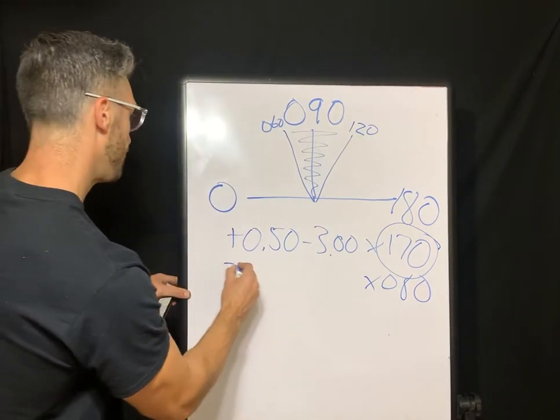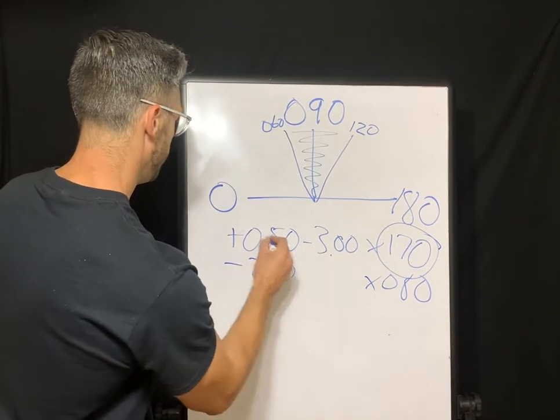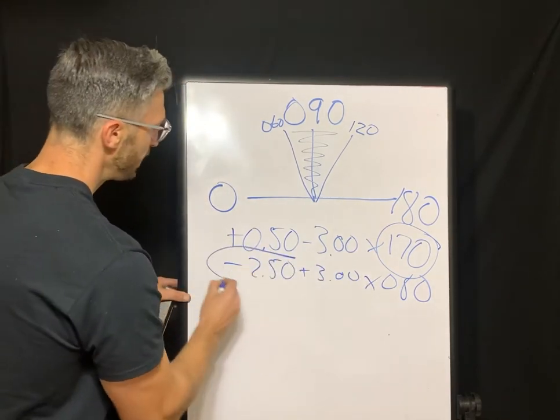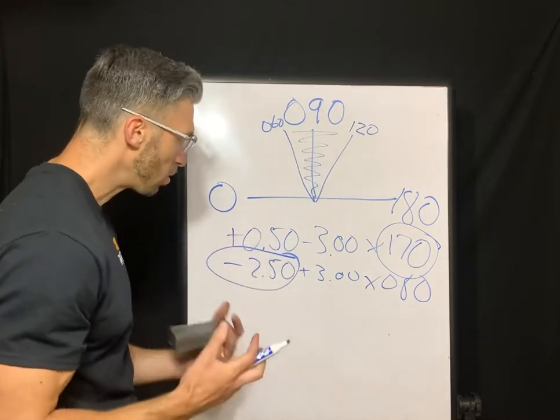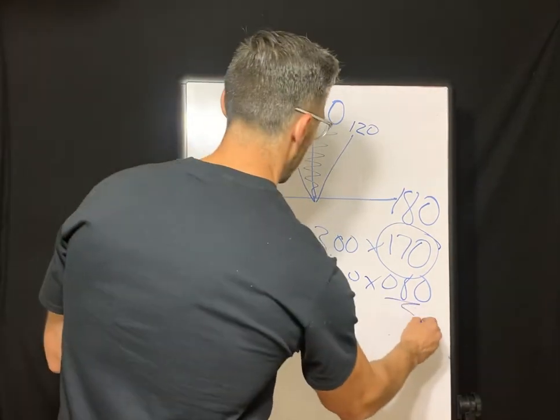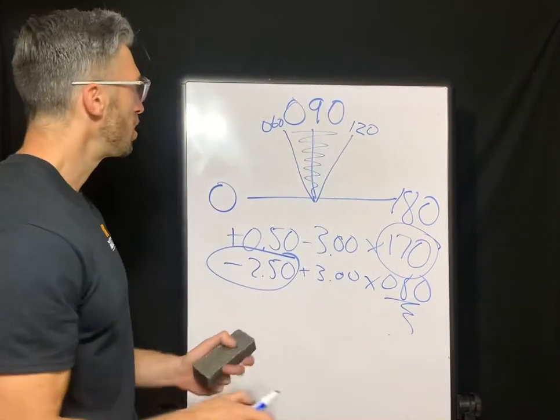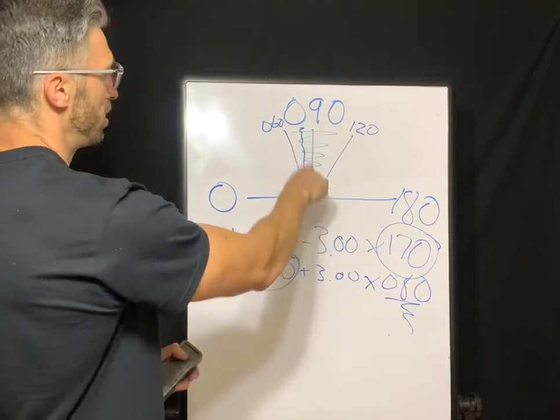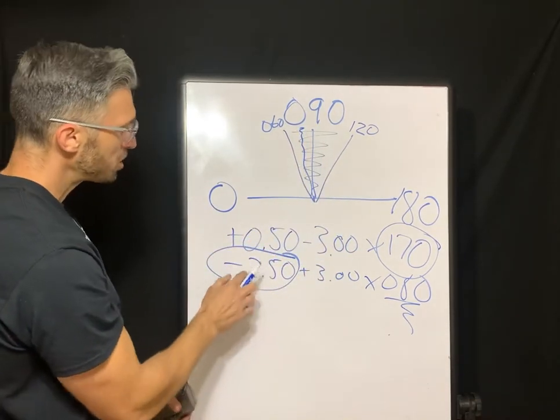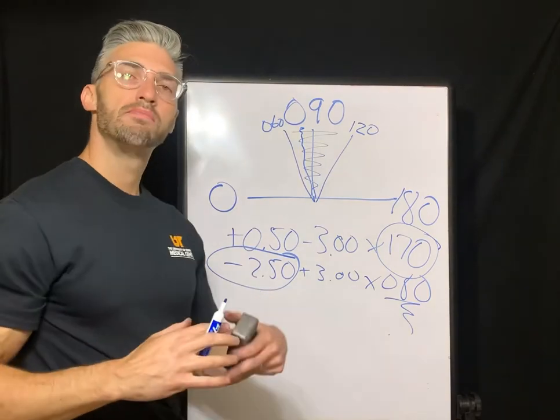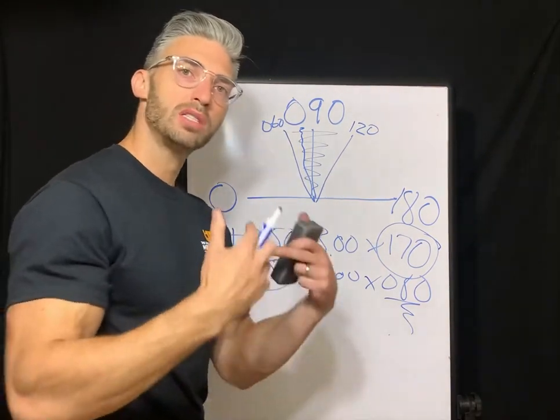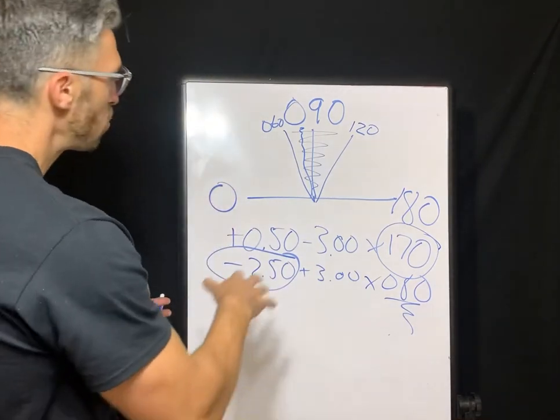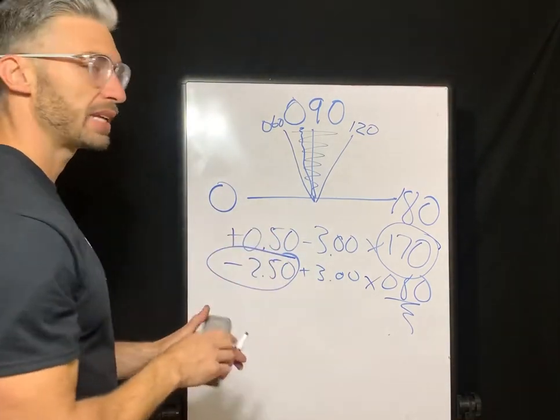So let's do plus a half, negative three, axis 170. We're in minus cylinder form. I want you to see that this 170 is definitely within 30 degrees of 180. So when we transpose 170, what's 80 and 90 is 170. So we're gonna say axis 80. Negative three and plus a half, you get negative 250. What we're looking at is our sphere power. That's how much power exists along the 80. Your 80 degree is going to be right here in this zone up here.